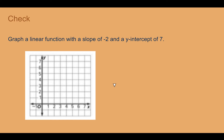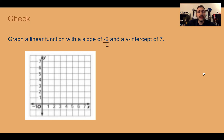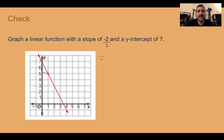Check your understanding: Graph a linear function with a slope of negative 2 and a y-intercept of 7. Hint: rewrite the slope as negative 2 over 1, which helps when graphing. The answer starts with a dot at 7, then goes down 2 and over 1 to the next dot, then draw the line. A common mistake is going down 2 without moving over 1 — that gives an undefined slope. If the slope is an integer, write it over 1.